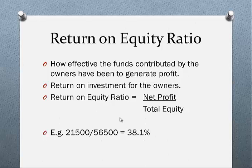In this example, the profit is $21,500 divided by total equity, which gives a return on equity of 38.1%. As a general benchmark, anything above 15% to 20% is considered okay, so 38.1% is considered good.